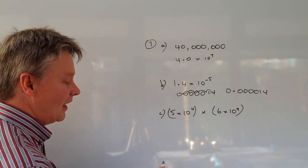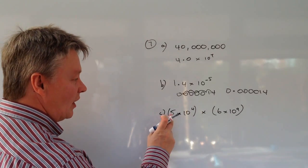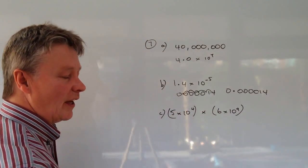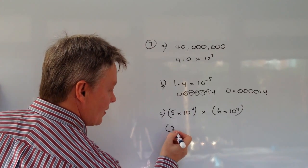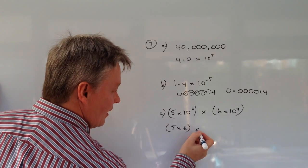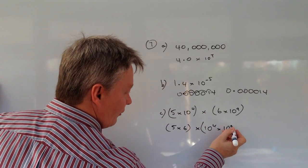On to part C. The way I would calculate this is I'd separate the two numbers here and then the standard form element of it and I'd write it separately as 5 times 6 times 10 to the power of 4 times 10 to the power of 9.